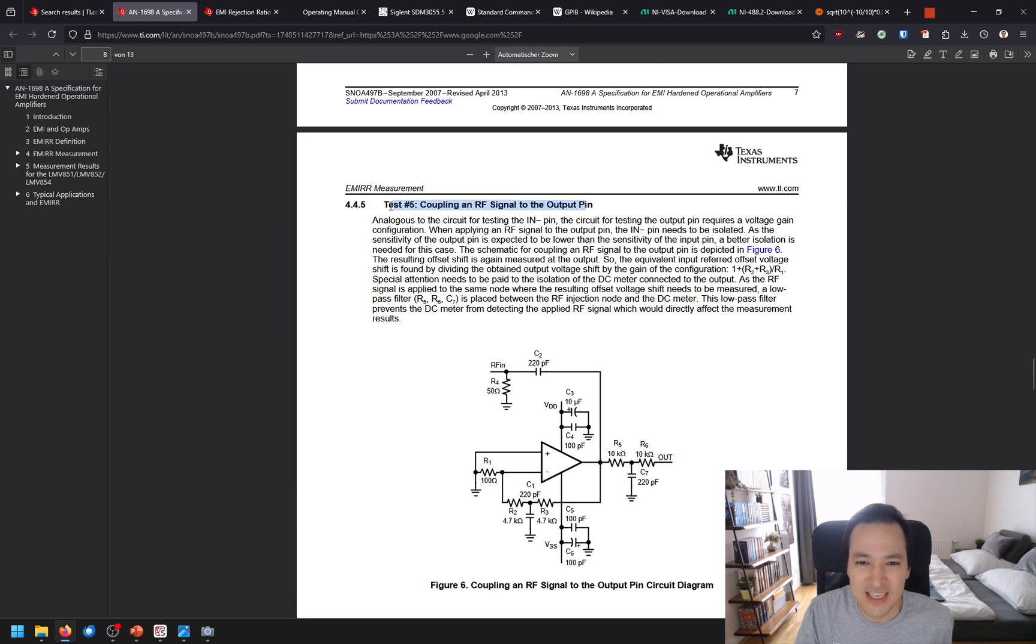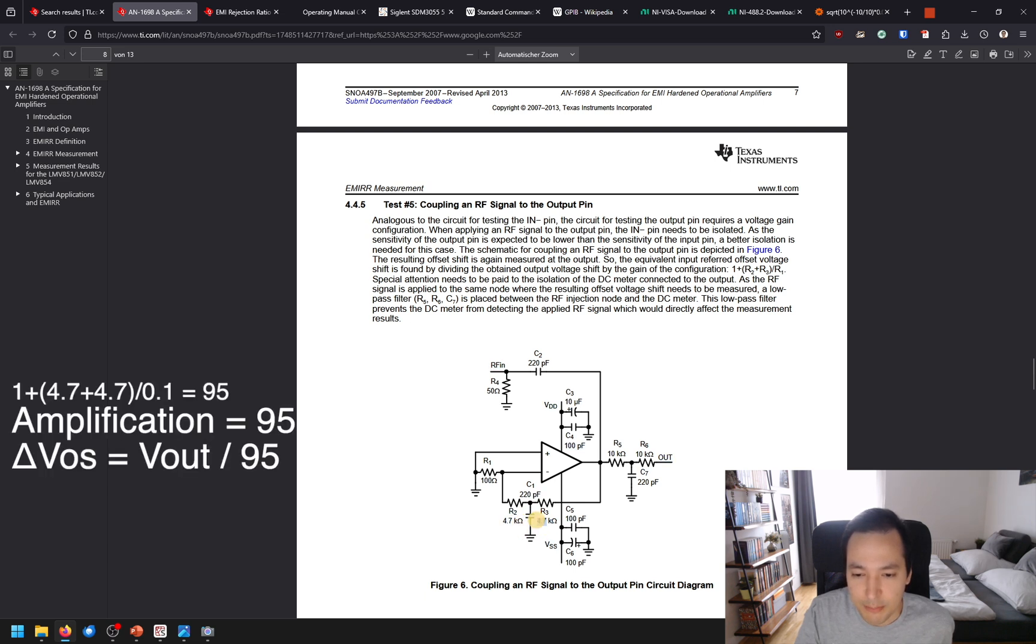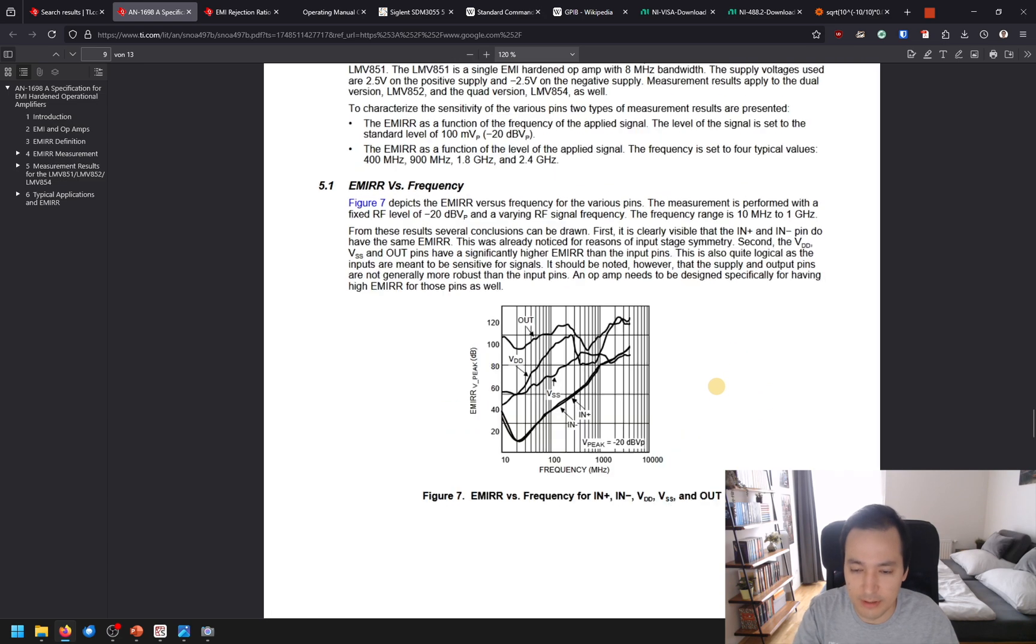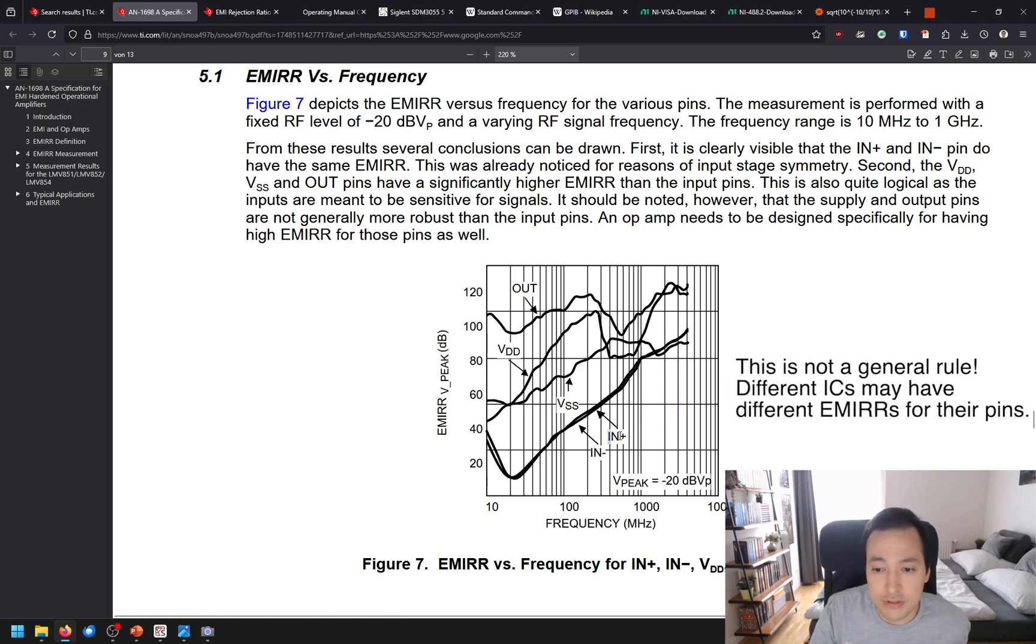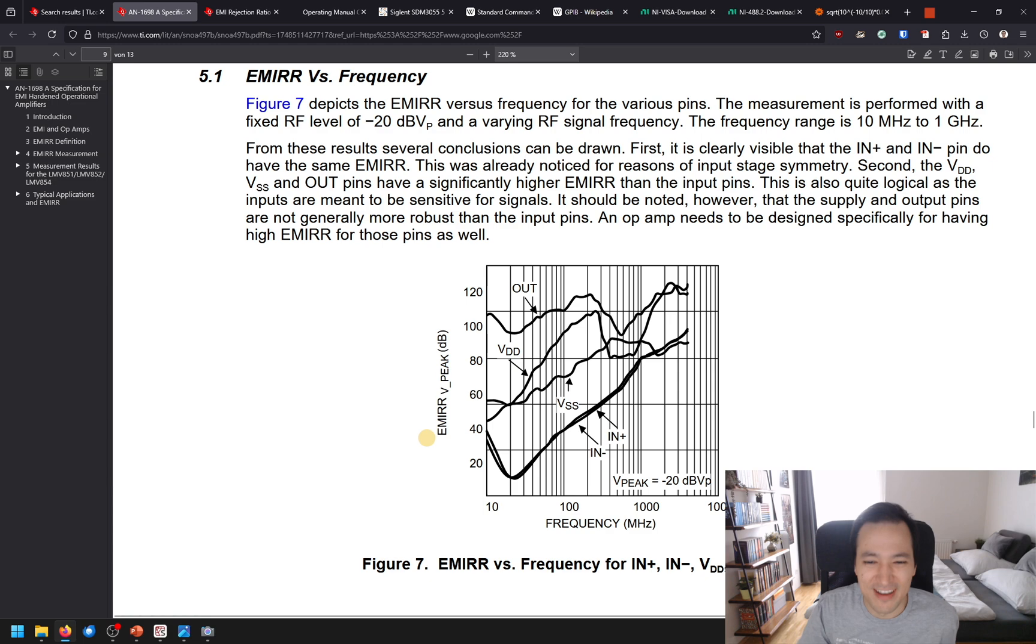Then we can also characterize the EMI rejection ratio of our output pin. We inject our RF signal here directly into the output pin of our op amp. Here we have amplification of 95, which results from 9.7 kilo ohm plus 9.7 kilo ohm divided by 100 ohms plus 1. Because if we want to model our DC offset voltage here at the positive input of our op amp, it will see this amplification. Now the EMI rejection ratio is not the same for every pin. This graph shows that it's expected that our inputs, both positive and negative, will show the lowest EMI rejection ratio. Remember, we want to have large values for EMI rejection ratio. So this is bad.